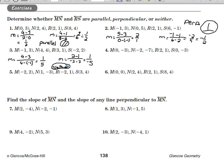You do the same thing on problems 4, 5, and 6. Now, for problems 7 through 10, find the slope of line MN and the slope of any line perpendicular to it. We'll just find the slope here.